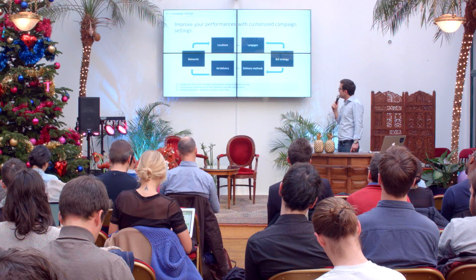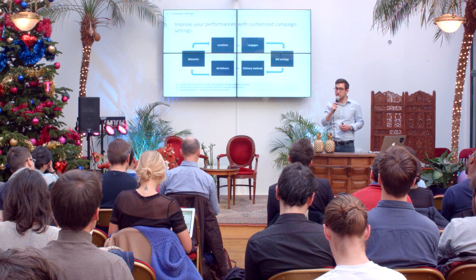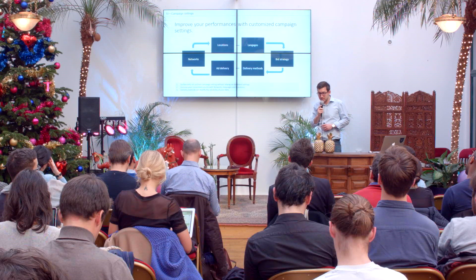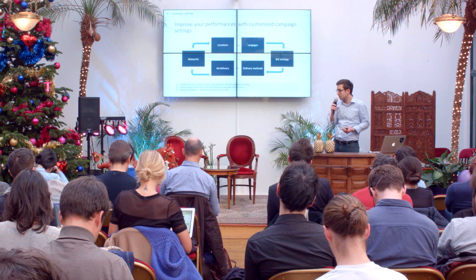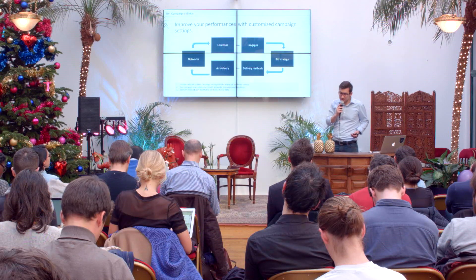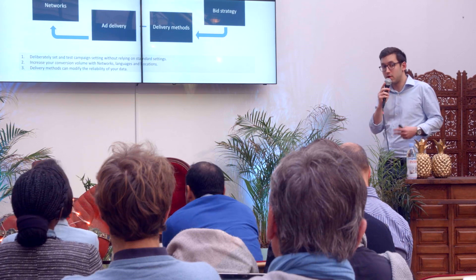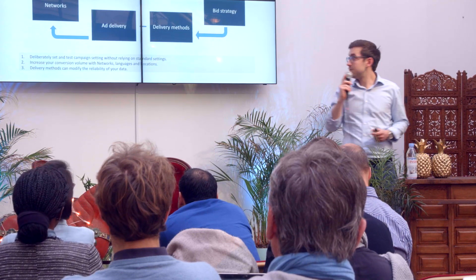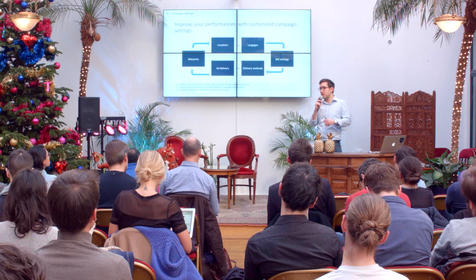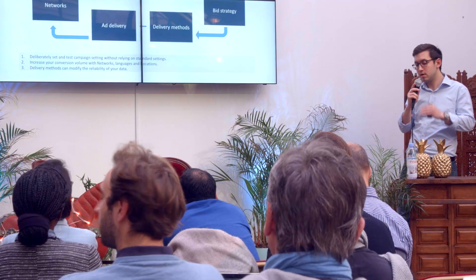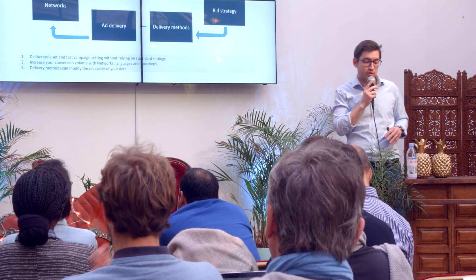Delivery methods: how is your budget spent over the day? The standard method for AdWords is standard delivery, meaning your budget is divided basically across 24 hours. Maybe at 6 p.m. you don't have enough budget to appear all the time, so sometimes your ad appears, sometimes it doesn't. If you set accelerated delivery, you will appear all the time. If you don't want to spend all your budget quickly, just decrease your bids — not your budget, just your bids.